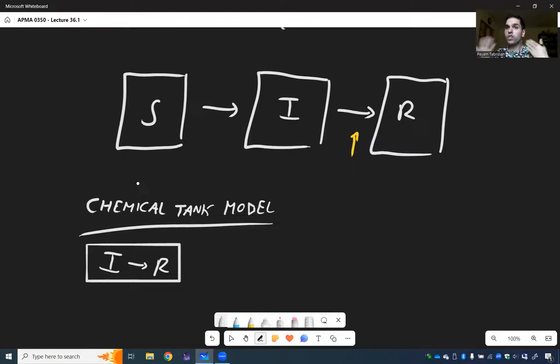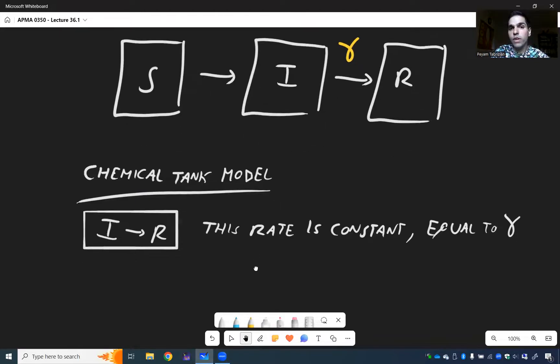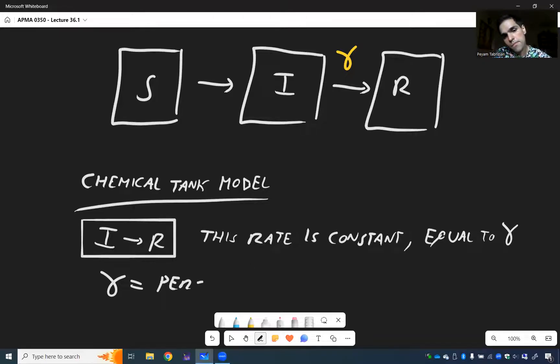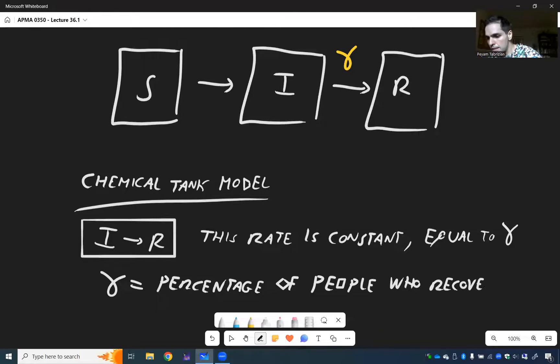So the same proportion of infected people recovers is constant. Let's set it equal to gamma. So here we can complete this. And here gamma is the recovery rate. So gamma is just a percentage of people who recover every day. Percentage of people who recover per day.